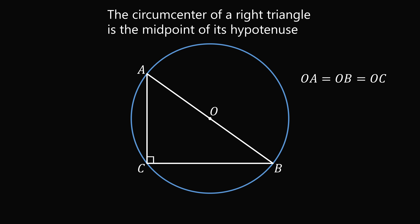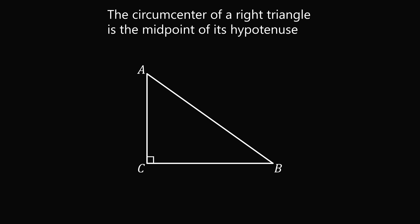So how do we do that? Let's go to triangle ABC. Along side AC, we will construct the perpendicular bisector. The perpendicular bisector of the side AC will form a right angle with side AC, and it will bisect the side AC. So this distance will be exactly the same as this distance. Now let's label this point as D. So we have AD is equal to DC, and we have a right angle at the point D. Let's label the intersection of the perpendicular bisector with the hypotenuse AB as the point O.